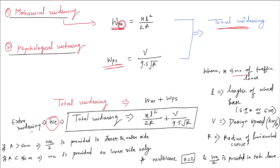Where N is the number of traffic lanes, L is the length of the wheelbase. In numericals, if L is not given, we generally assume 6.1 or 6 meters — please note the unit of L is in meters. V is the design speed, always in kilometers per hour. R is the radius of the horizontal curve.